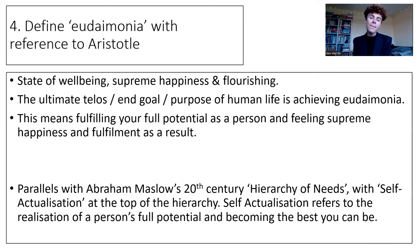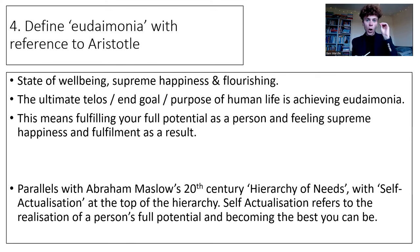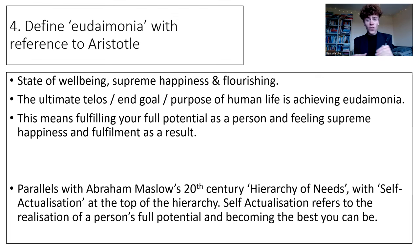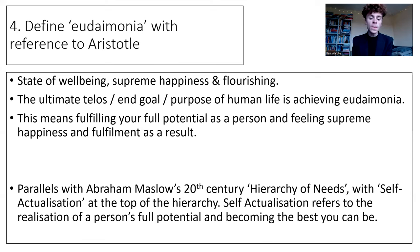Interestingly, in the 20th century Abraham Maslow — a key psychologist — came up with the hierarchy of needs, and at the very top was self-actualisation. He believed that is ultimate happiness for human beings, what we should be striving for, though not everybody will fulfil it in their lives. Self-actualisation refers to the realisation of a person's full potential — becoming the very best that you can be. We can trace that all the way back to Aristotle and his idea of eudaimonia.